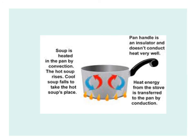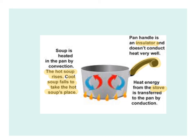In a pan of soup, heat from the stove is transferred to the pan by conduction, and then within the pan, hotter soup rises while cooler soup falls to the bottom and takes its place — that's convection. This continues until everything reaches the same temperature. Most pans have a handle that is a thermal insulator, which doesn't conduct heat well.